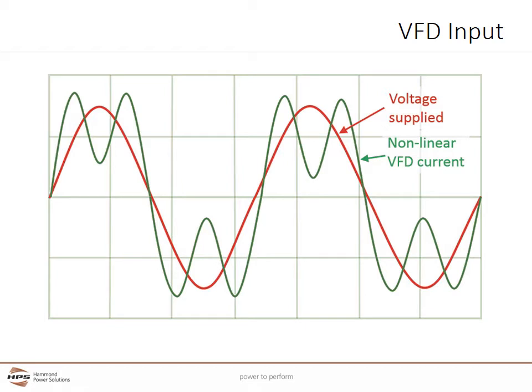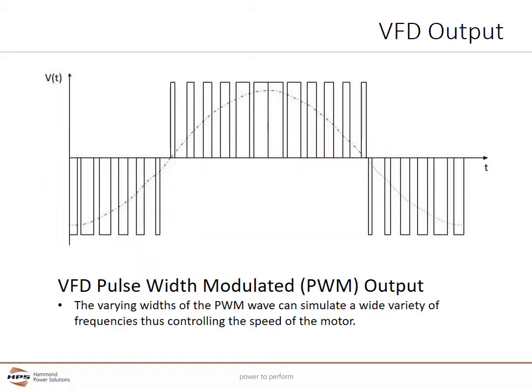The input or line side of a VFD uses rectifiers and is basically a DC power supply, creating current harmonics when it transforms AC to DC power. As a result, harmonics distort the utility's red sine wave to look like the green wave. Current harmonics can cause significant issues within the facility and if they exceed the standard called IEEE 519, the utility can fine the user. The output of a VFD uses semiconductors to quickly switch the input voltage on and off in what's called a pulse width modulated or PWM output. By varying the width of the DC pulses, a VFD can simulate a wide range of frequencies from near zero to several hundred hertz, controlling motor speed. The PWM wave can have some unintended consequences which can cause problems with cabling and the motor.